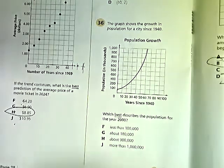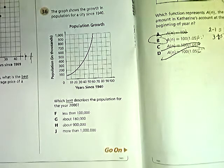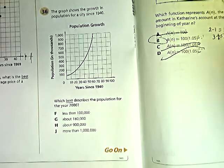The graph shows the growth of the population of a city since 1940. What best describes the population for the year 2000? And if I remember correctly, this one's kind of close. So remember to use your calculator as a tool. Good luck.